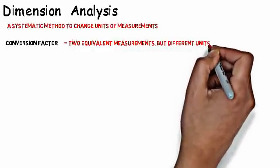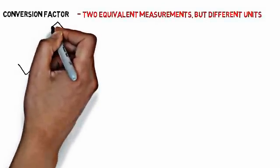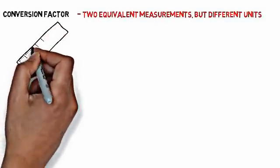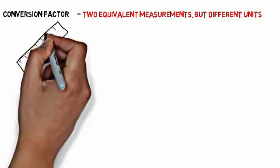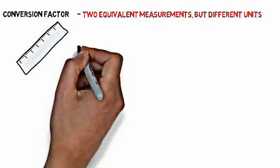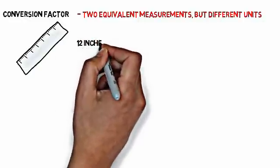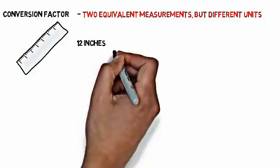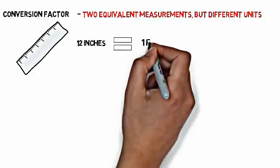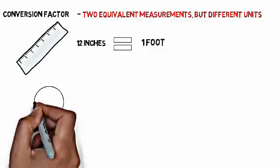A conversion factor consists of two equivalent measurements that have different units. Think about a standard old-style wooden ruler measured out in inches. A one-foot ruler would be 12 inches. These are two different units of measurement, but they're measuring the same thing: 12 inches equals one foot.